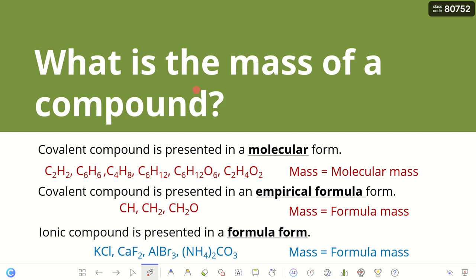So what is the mass of a compound? That is what we are looking for on this topic. As we learned last semester, a compound can be a covalent compound or an ionic compound. A covalent compound can be presented in molecular form, where the formula shows exactly how many of each element are present in the molecule. For example, C2H2 means two carbon atoms and two hydrogen atoms. Another compound has two carbon atoms, four hydrogen atoms, and two oxygen atoms.